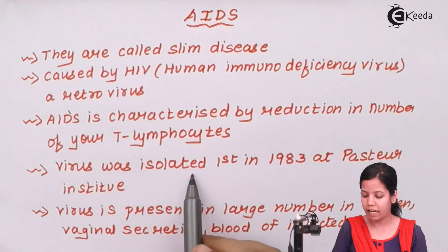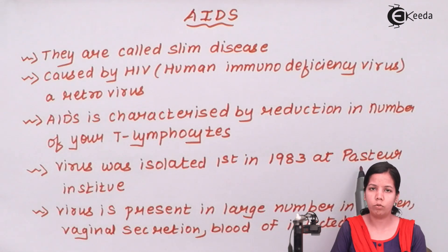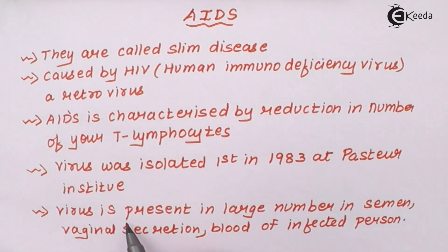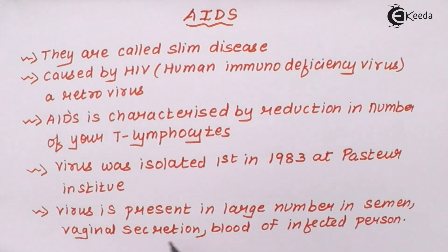This AIDS virus was first isolated in 1983 at the Pasteur Institute. After that, many cases of AIDS were seen around the globe. Infections of AIDS can spread due to only a few reasons. Handshaking, coughing, sharing water bottles, or just talking to an infected individual will not cause the disease. The virus can be present in large numbers in semen, vaginal secretions, and blood of an infected person. If any of these three is transferred by any means, then a person can get AIDS.